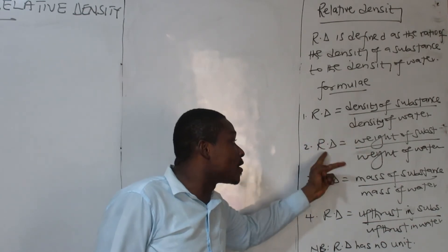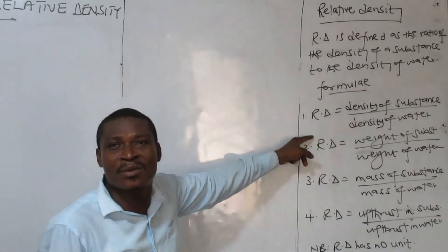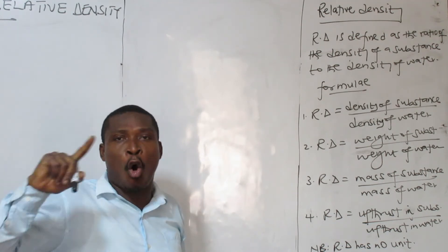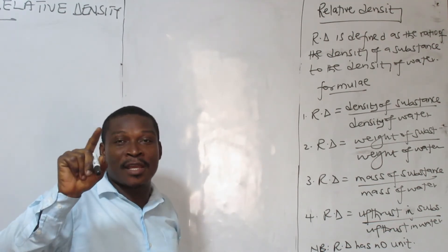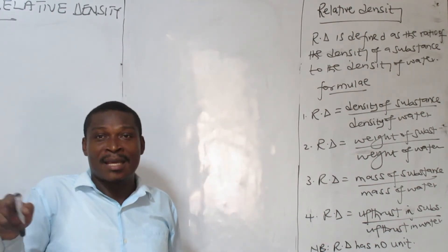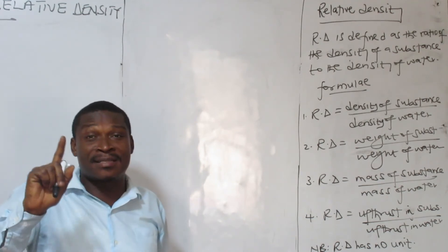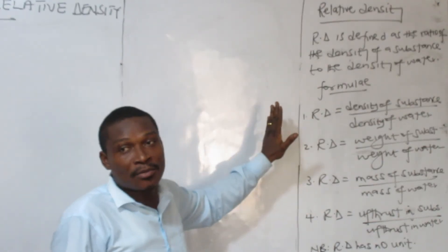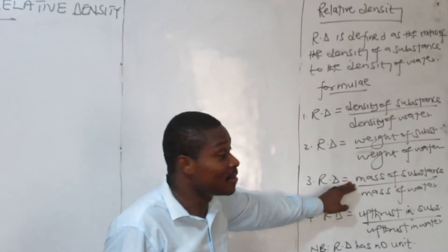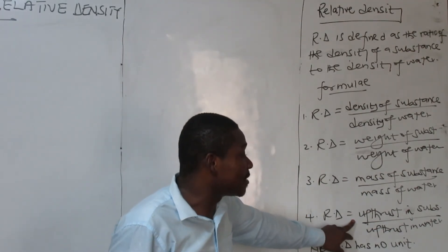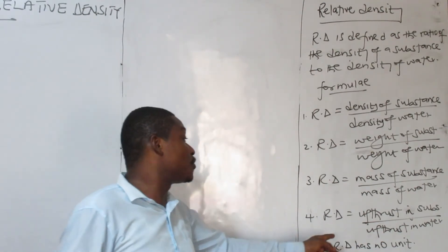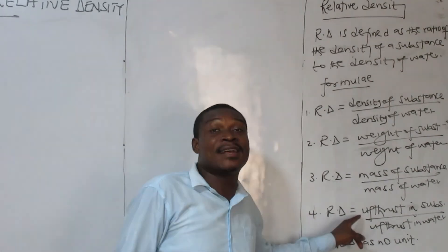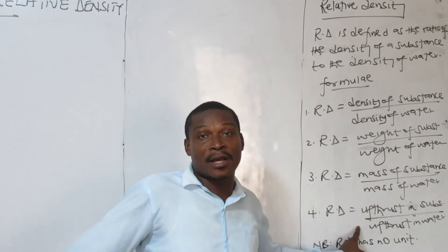These are the respective formulas we can use for relative density: density of substance to the density of water, or weight of substance to weight of the equal volume of water. The density of water is known — its value is 1,000 kg per cubic meter or 1 gram per cm³. That is why something is always relatively compared to water. If you have the masses, you can also use mass of substance over mass of water, or upthrust in substance over upthrust in water.